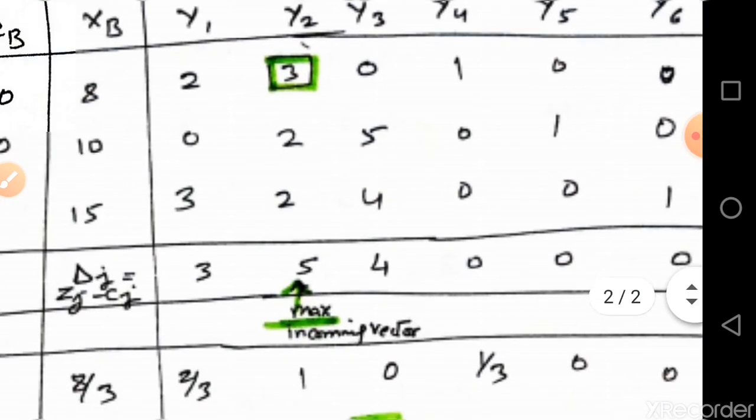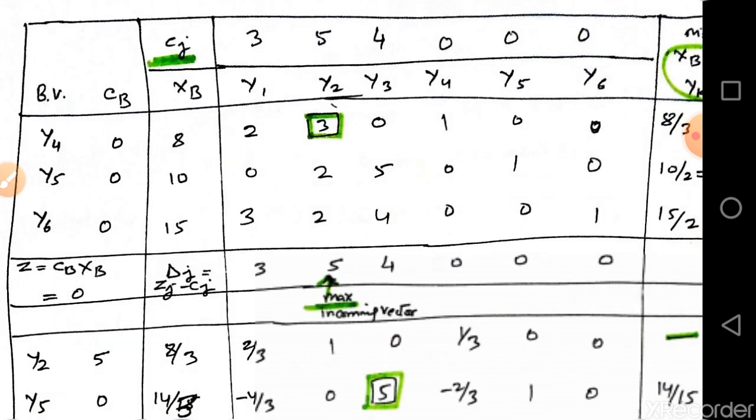We also calculate the minimum ratio x_b over y_k, provided y_k is greater than 0. Keep in mind: if y_k is negative or zero, we do not calculate the minimum ratio — just put a dash. This completes our first simplex table.